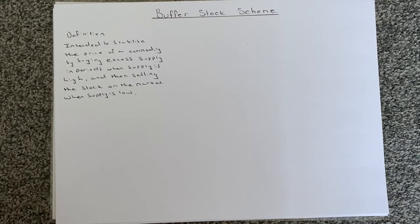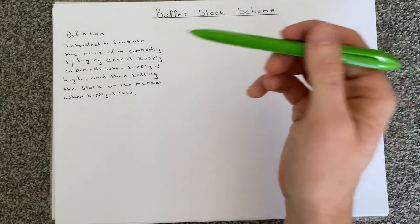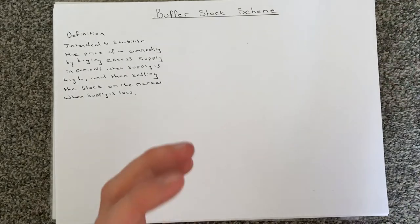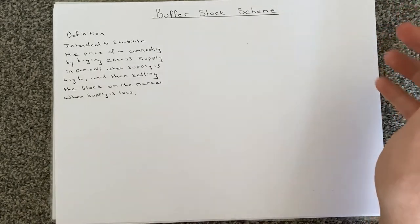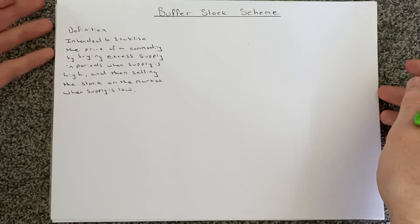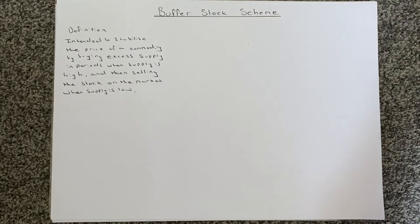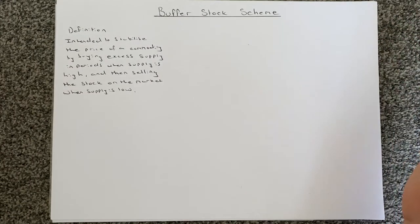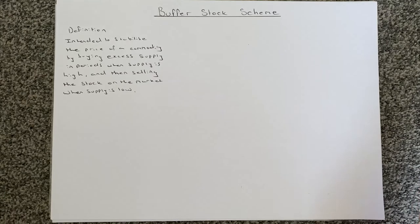So just to recap: a buffer stock scheme is intended to stabilise the price of a commodity. The way it works is that a government would buy up excess supply when supply is plentiful — when there's a large quantity supplied — store it, and then release that stock onto the market when supply is low. By buying when there's excess supply and releasing stock when supply is low, that should allow the price to stabilise.